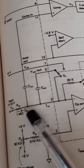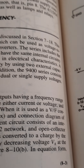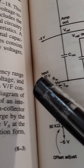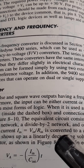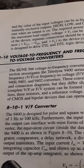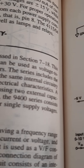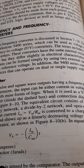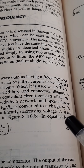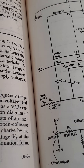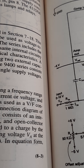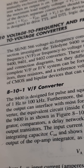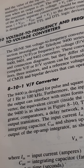The input current IIN equals VIN divided by RIN. This current is converted to a charge by the integrating capacitor CIN, and it shows up as a linearly decreasing voltage VA at the output of the op-amp integrator.